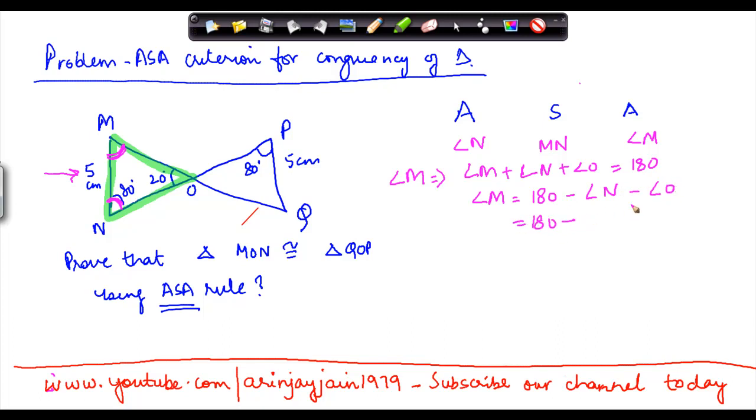I know the value of angle N is 80 degrees and O is 20 degrees. So 180 minus 80 minus 20 will give me 80 degrees, so the value of angle M in this case is 80 degrees. This is what I have found.